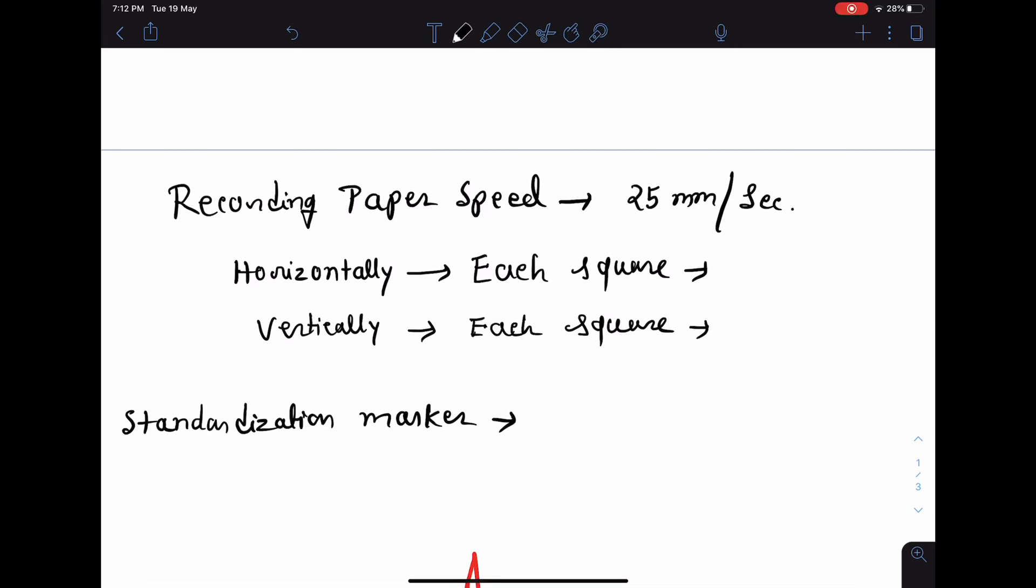Now whenever an ECG is recorded, almost universally the speed of the recording paper is kept at 25 mm per second. So if the paper moves at a speed of 25 mm per second, then each small square horizontally will represent 0.04 second, and vertically each small square will represent an amplitude of 0.1 millivolt. In the horizontal plane it represents duration, and vertically it represents amplitude.